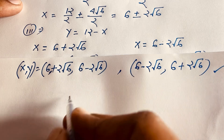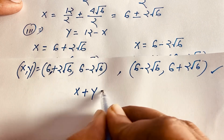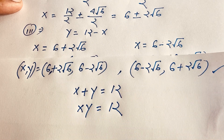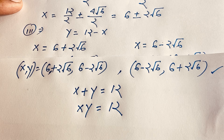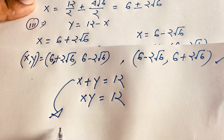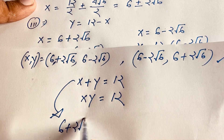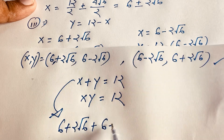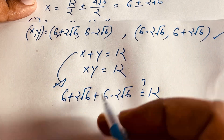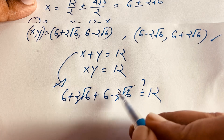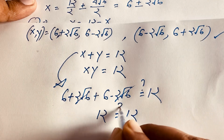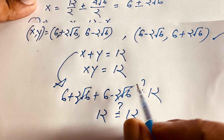Let's verify. Our question is x plus y equals 12 and x times y equals 12. Checking the first condition: (6 plus 2 root 6) plus (6 minus 2 root 6) equals 12. The 2 root 6 terms cancel out since one is positive and one is negative, leaving 6 plus 6 equals 12. So x plus y equals 12 is confirmed.